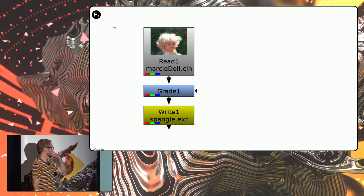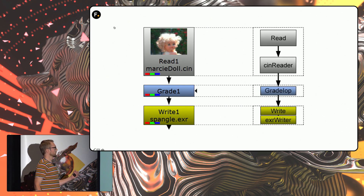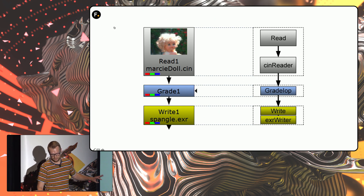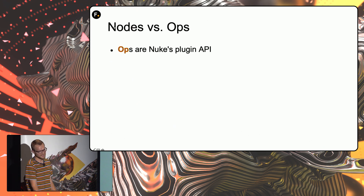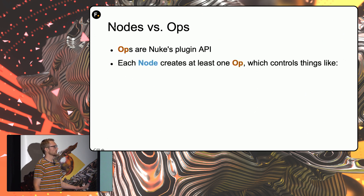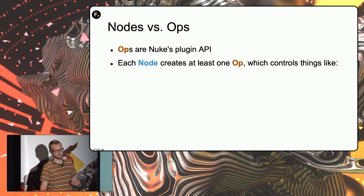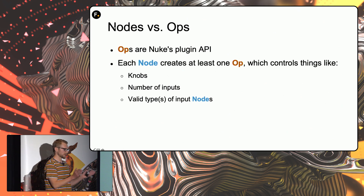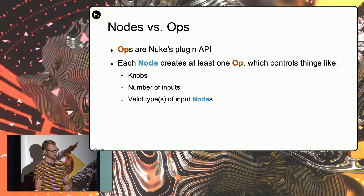You're all familiar with the node graph — this is what everybody interacts with. Under the hood, Nuke is using information from the node graph to build trees of operators, or ops, as they're called, and these are what do the actual processing work. In Nuke, ops are the plugin API. You can't write nodes, at least not right now. By defining a new op class, you're also creating a new node class. When you create a node, it creates an op — at least one op — and the op is responsible for defining things like which knobs show up on the node, how many inputs the node has, whether it's a fixed or dynamic amount, and which types of ops can be connected to the various inputs: deep ops, 3D ops, 2D ops, and so on.